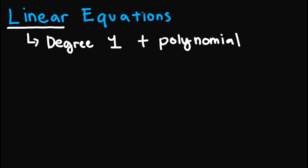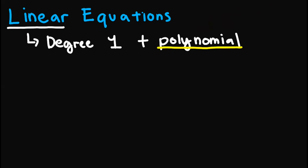Recall that when we say polynomial, these are algebraic expressions wherein the degree of the exponents must be an integer, a positive integer. So we can't have like x raised to negative 1 or x raised to 1 half, since negative 1 is not positive and 1 half is not an integer. And since we have equation, we'll be dealing with the equal sign.